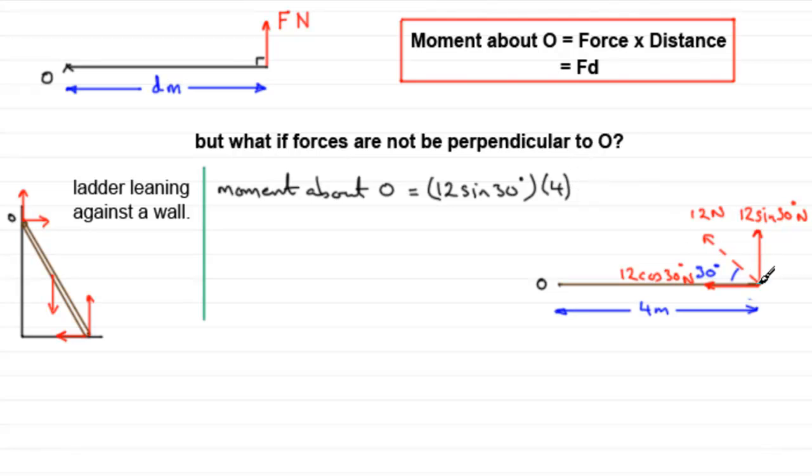Now when it comes to this component of the 12 newtons, there's no moment about O because this force passes through O. And as we've seen before, if any forces pass through your point that you're taking moments about, they produce no turning effect, no moment. So this is the only force providing a moment about O. And if we work it out, the sine of 30 degrees is a half, 12 sine 30 would be 6, and 6 times 4 is 24. And the units would be newton meters. So we've got a moment of 24 newton meters about O.